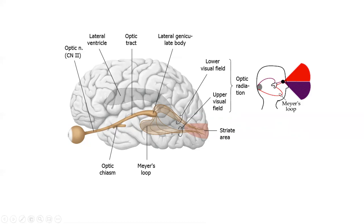In dissection, it's important to note that Meyer's loop — the lower fibers — will come in beneath the calcarine sulcus, and the upper fibers, Baum's loop, which again serves the lower visual field, are going to be superior to the calcarine sulcus. This shows again that it's flipped from what you would expect — up is down and down is up.